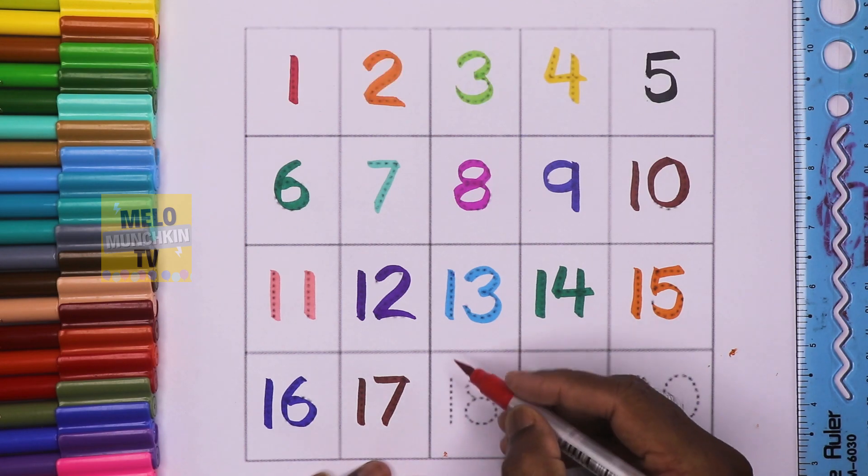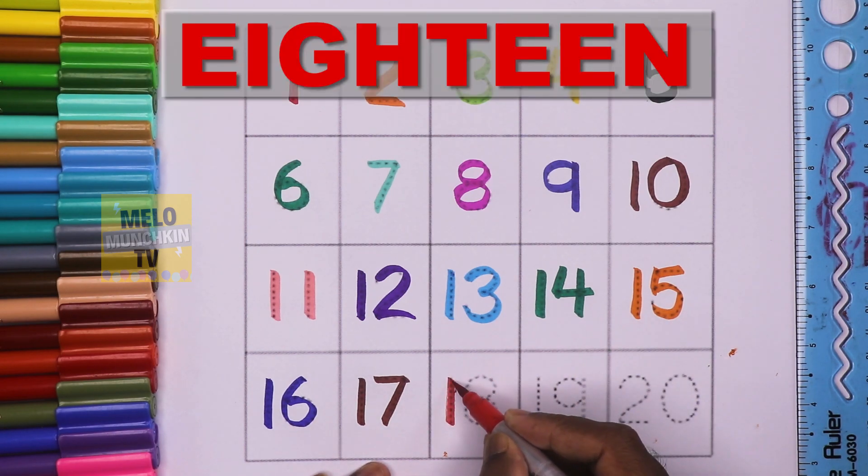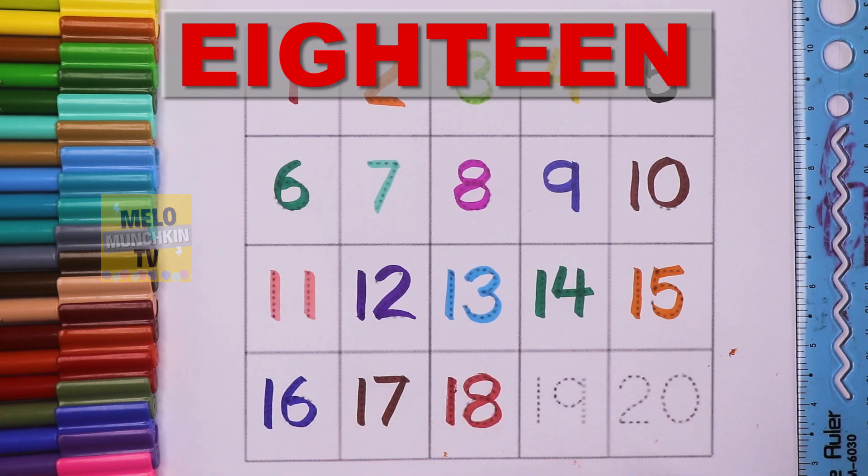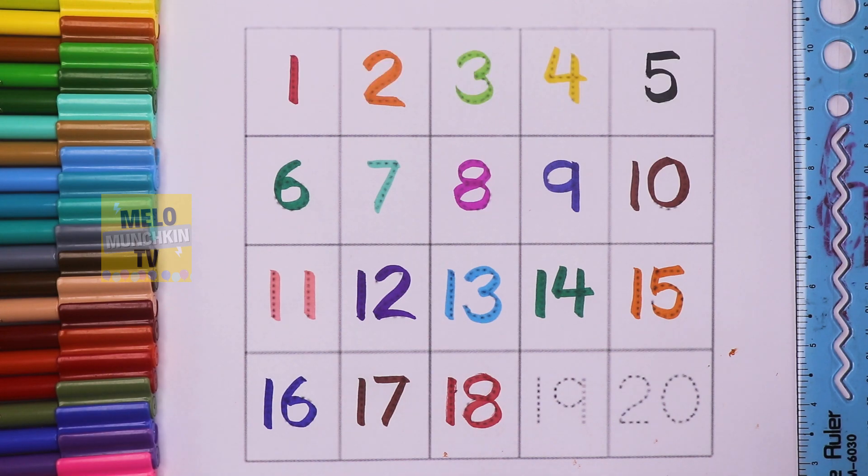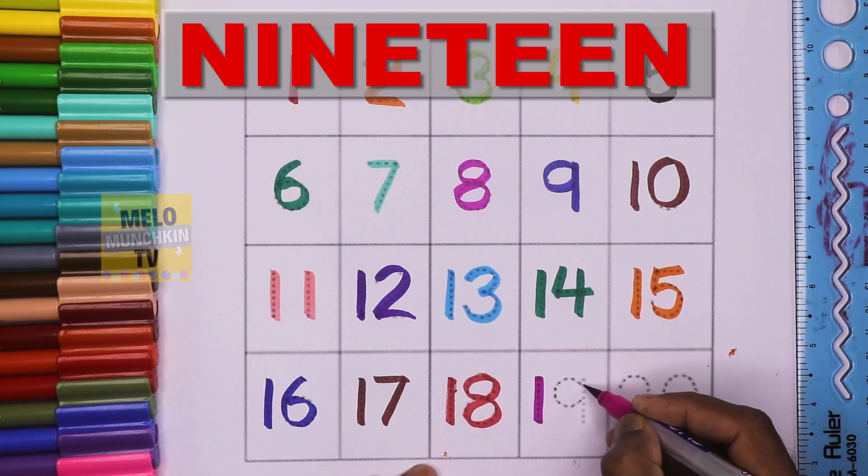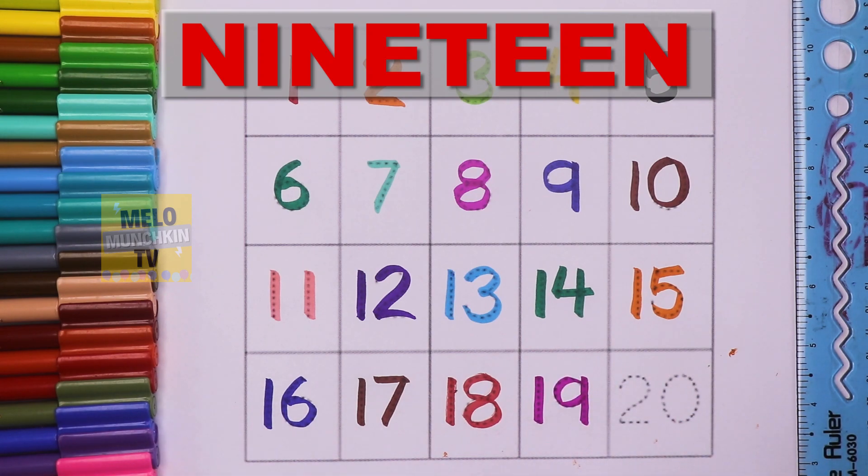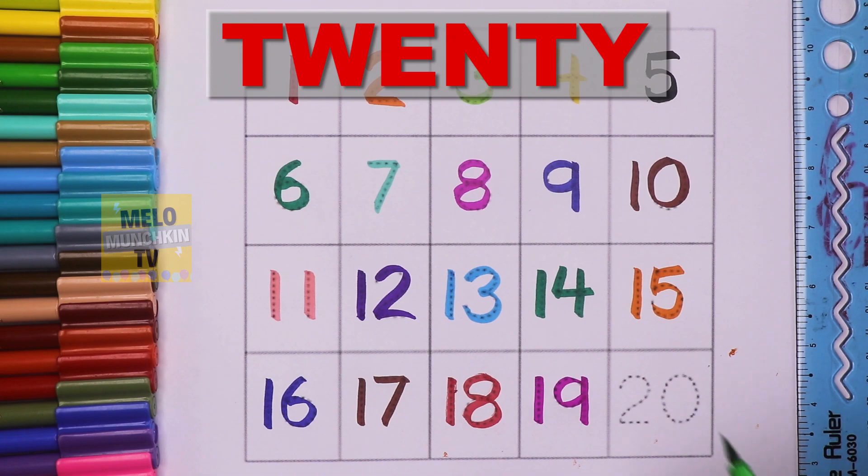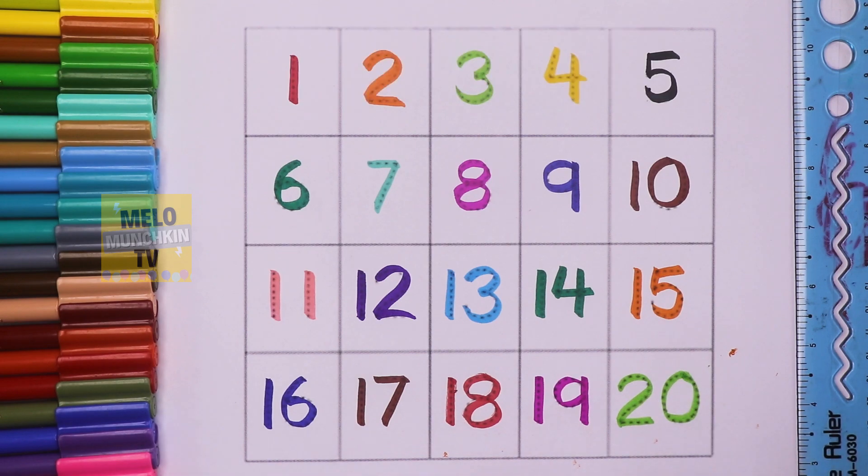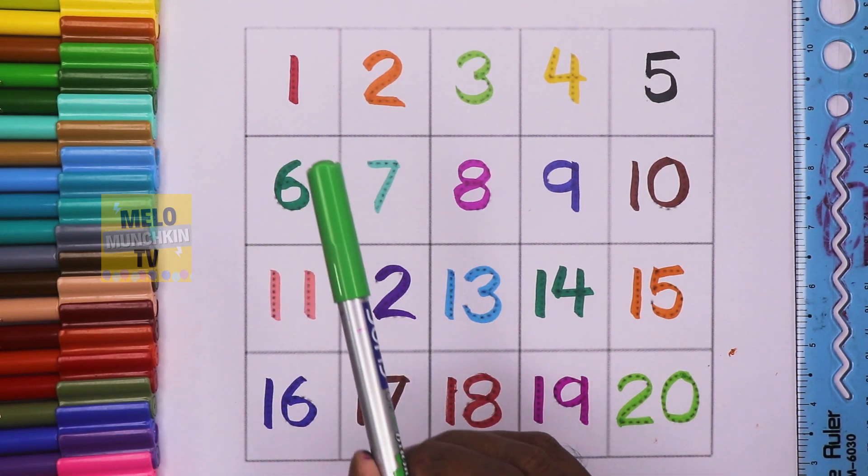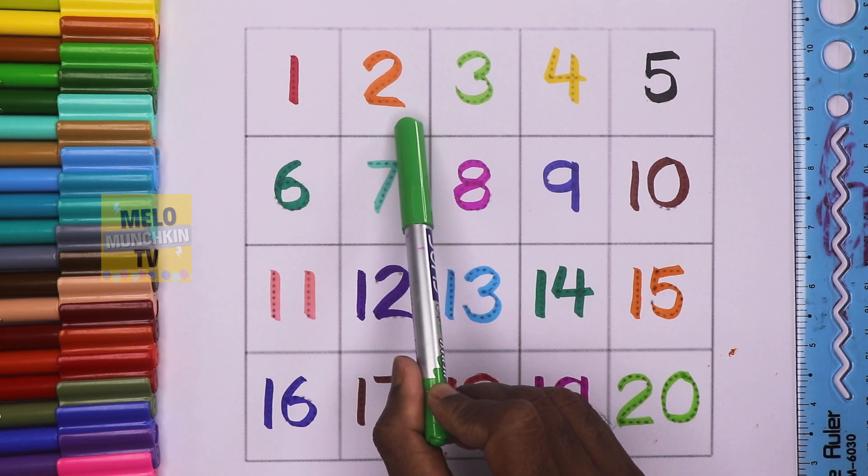Eighteen: E-I-G-H-T-E-E-N, eighteen. Nineteen: N-I-N-E-T-E-E-N, nineteen. Twenty: T-W-E-N-T-Y, twenty.